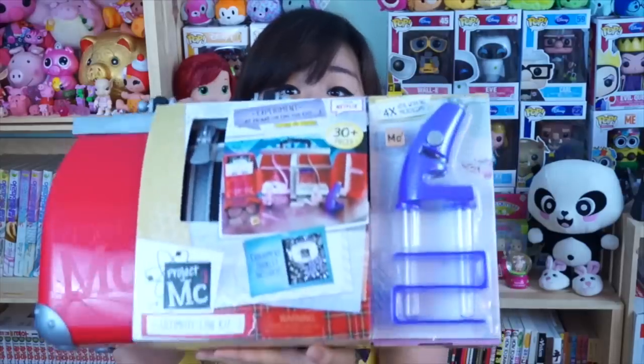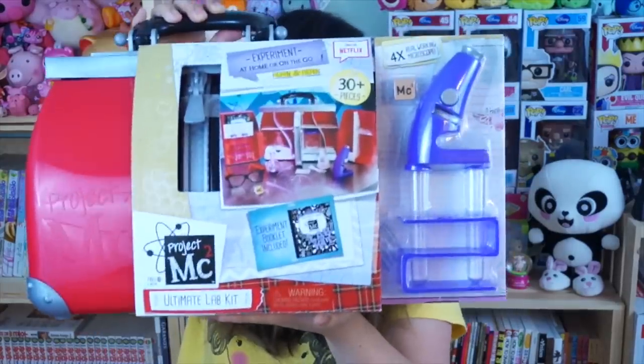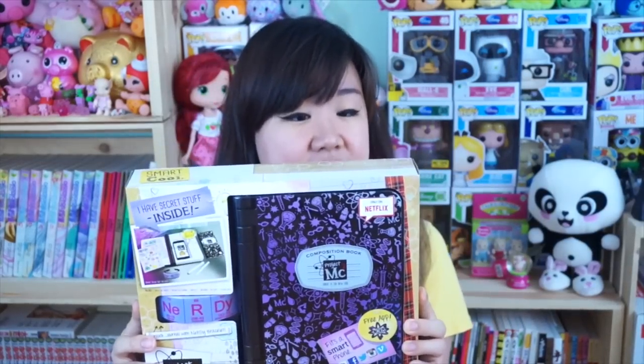Hi guys, Laosic here. Today I'm going to be reviewing some really exciting stuff for you guys. I have Project MC Squared Ultimate Lab Kit and then the next one I have is this MC Squared ADISN Journal, which is like a super spy notebook journal. So without further ado, let's get started and take a look at these two items.